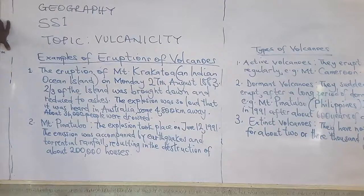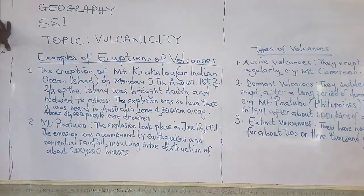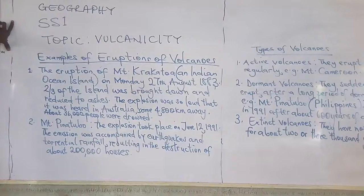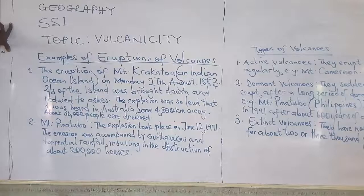The explosion was so loud that it was heard in Australia, which is about 4,800 kilometers away. The explosion was also so tragic that almost 36,000 people were drowned — of course, it is an island — during that volcanic eruption of Mount Krakatoa.